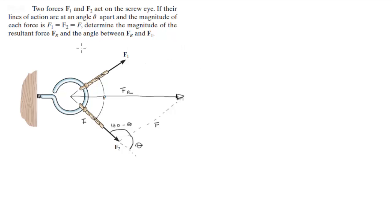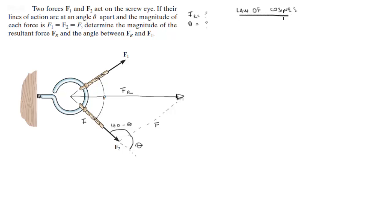Now that we have our diagram, let's get some calculations done. They're asking for the magnitude of FR and theta. To find FR, we use the law of cosines, which says C squared equals A squared plus B squared minus 2 times A times B times cosine of angle C.